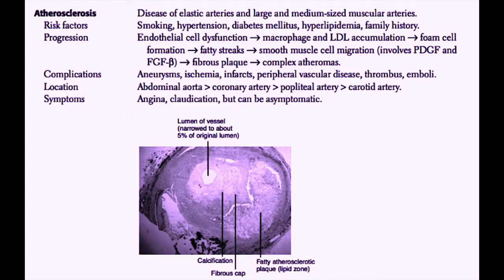The most common locations for atherosclerosis include the abdominal aorta, the coronary arteries, the popliteal arteries, and the carotid arteries. The symptoms of atherosclerosis depend on where it is located — for example, with coronary arteries a person may have angina, and with the lower extremities they may have claudication. But also remember that atherosclerosis may be asymptomatic. Unfortunately, 50% of patients with a lethal myocardial infarction will have no symptoms prior to their MI.